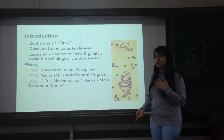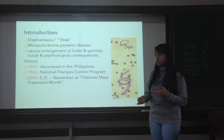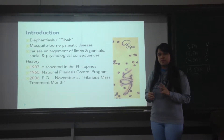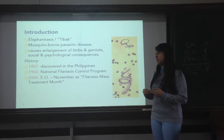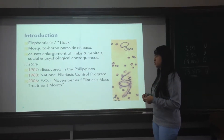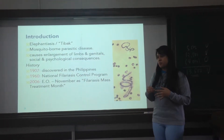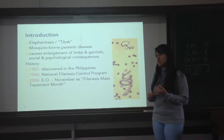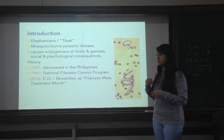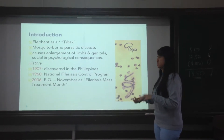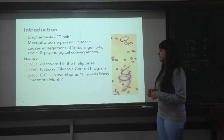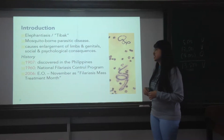Lymphatic filariasis goes back as much as 90 years ago in the Philippines. It was discovered in 1907 by foreign workers. Because of this, in 1960, the government made a National Filariasis Control Program consisting of mass treatments and prevention programs that allowed the possibility for this disease to decrease in the Philippines. And in 2006, there was an executive order which declared November as filariasis mass treatment month.